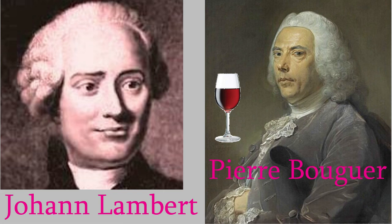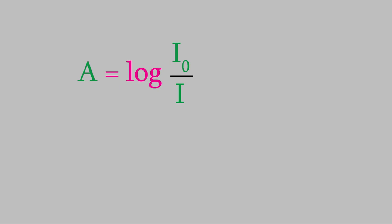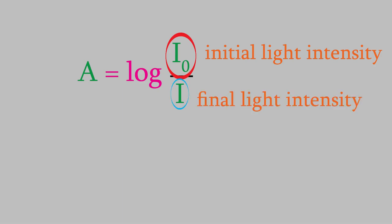But what exactly is absorbance, anyway? Absorbance is a way of comparing the intensity of the light that goes into a sample versus the amount that comes out. Here's an equation that defines absorbance. In this equation, I0 is the intensity of the light that goes in, and I is the intensity that comes out. As you can see, there's a logarithm in that equation.